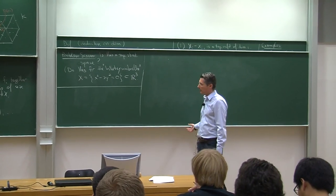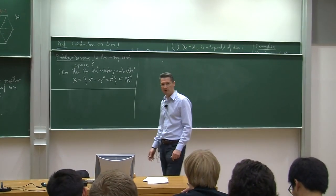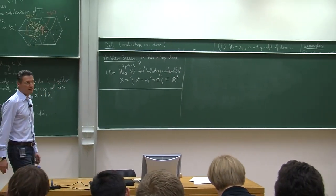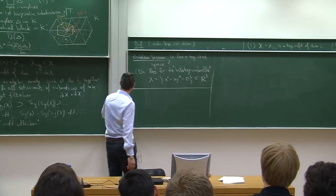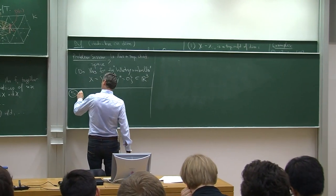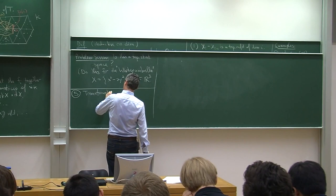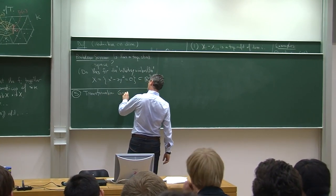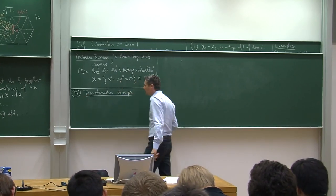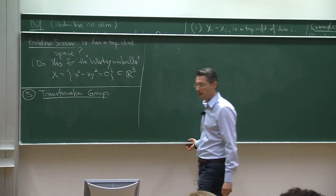That's all I'll say about algebraic varieties for now; we continue the discussion in the problem session. I want to move on to another important class of stratifiable spaces — transformation groups — and make some remarks about ways to get a stratification for the orbit space of such an action.